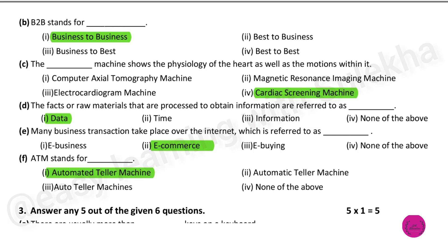The blank machine shows the physiology of the heart as well as the motion within it, that is cardiac screening machine. The facts or raw materials that are processed to obtain information are referred to as data.